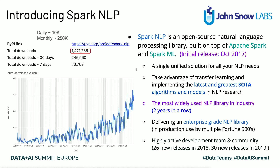Spark NLP has been for two years in a row the most widely used NLP library in the enterprise, starting in early 2019. We have grown between seven to eight times in terms of downloads during 2020, and right now we are just over 10,000 downloads a day. The library is very actively developed, with new versions delivered every two weeks — 26 releases in 2018, 30 in 2019, and already 26 in 2020.